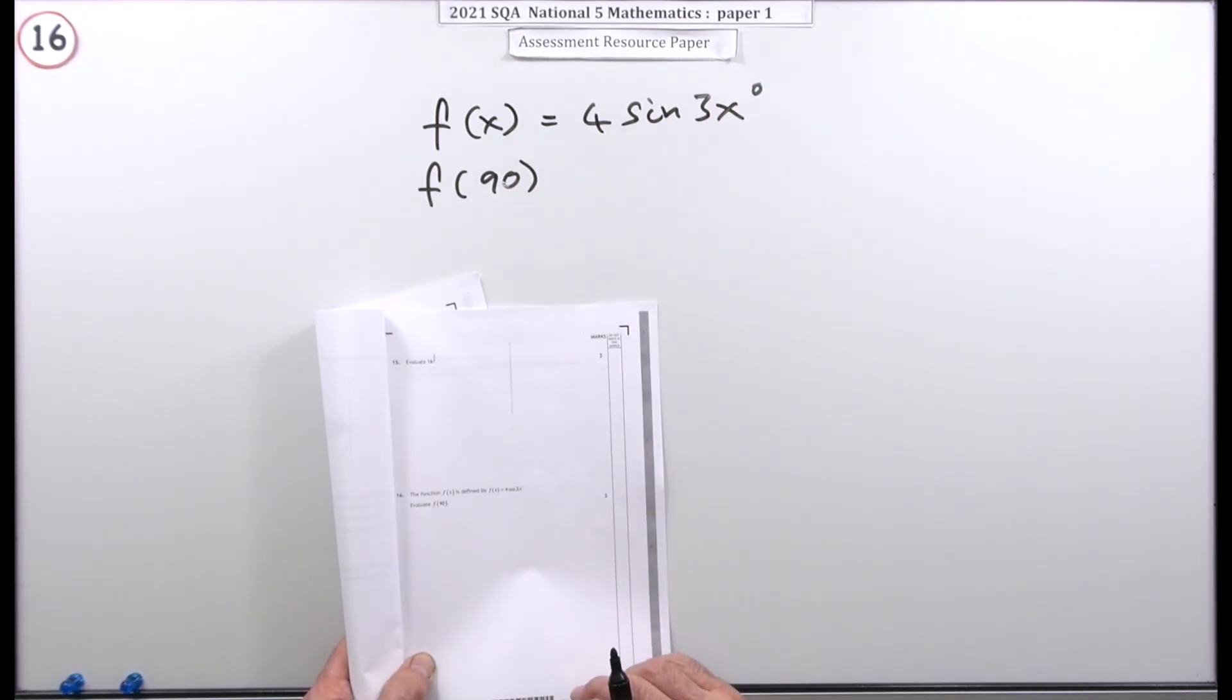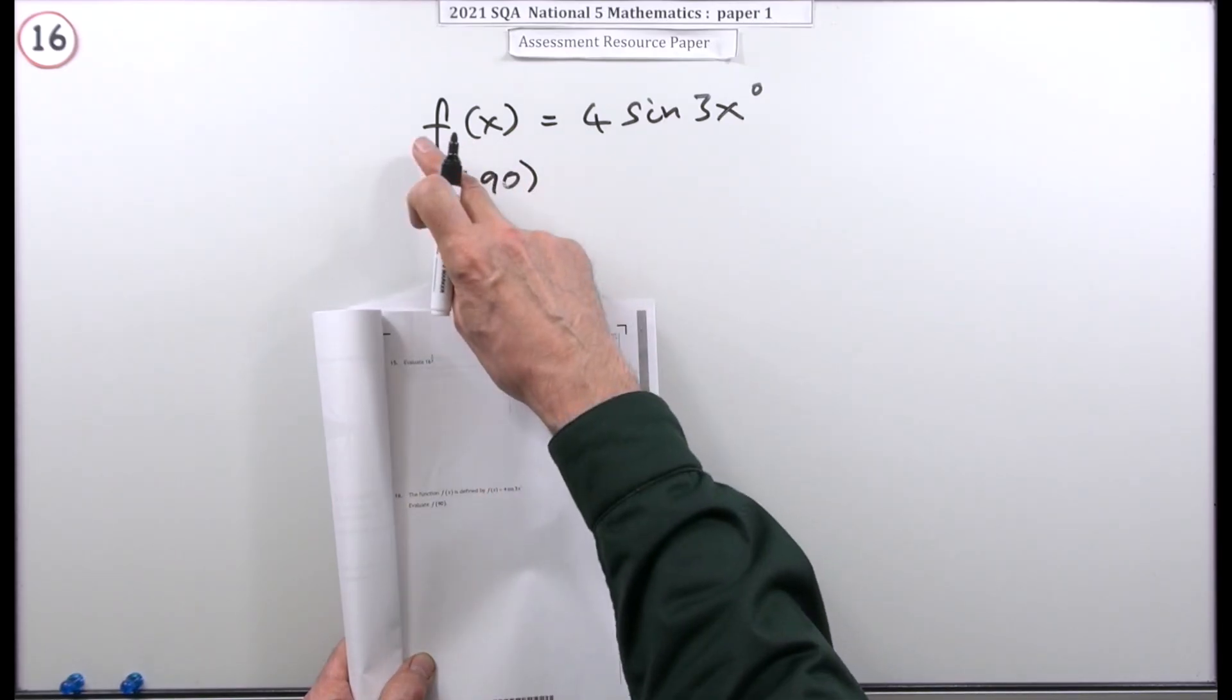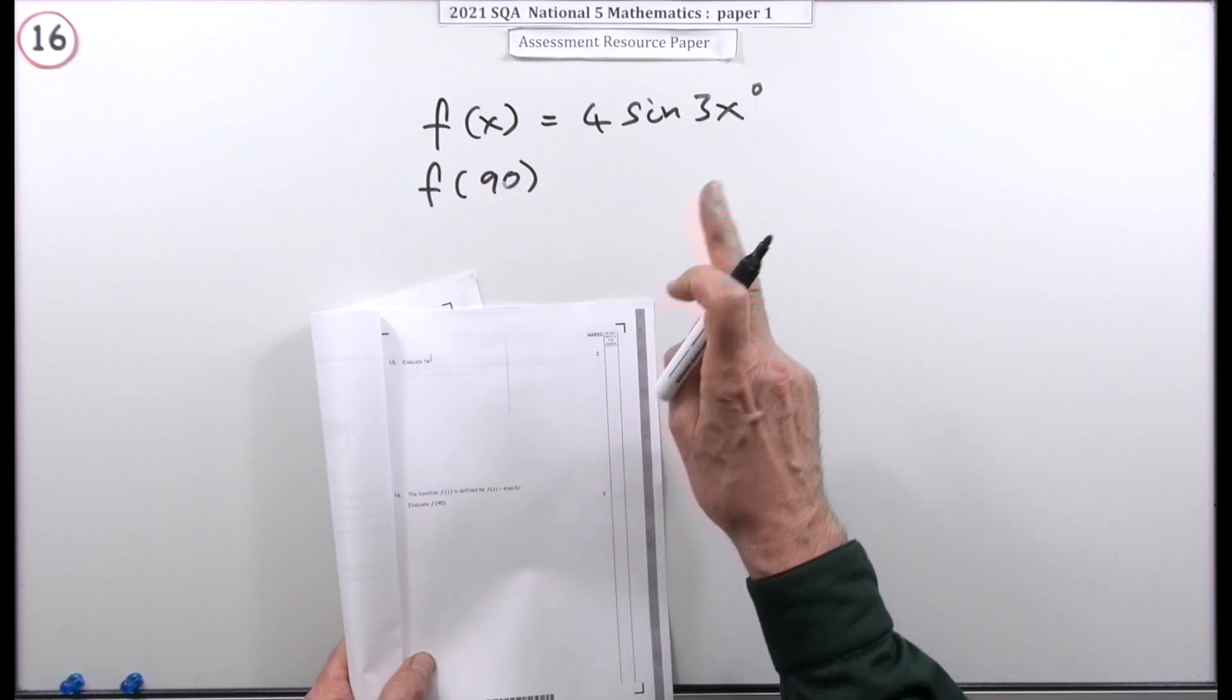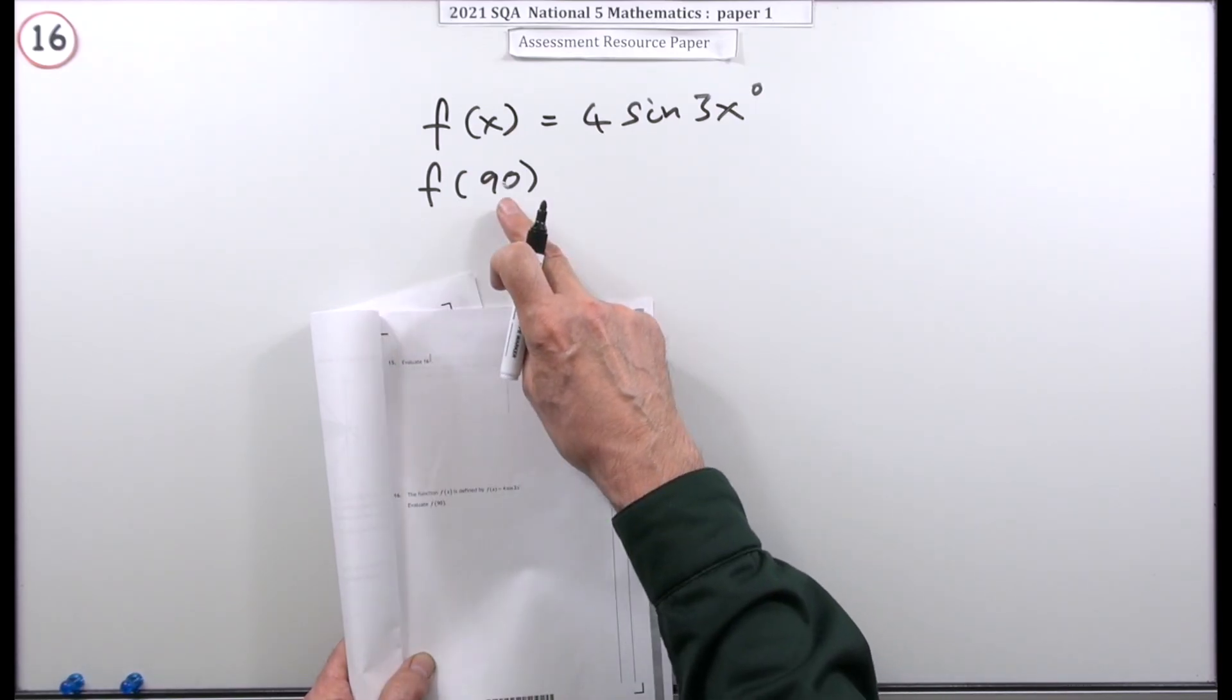Number 16 then from paper 1 of the 2021 National 5 Resource Paper. Just the two marks. A function is defined by, here's the formula for the function, f of x equals 4 sine 3x. If that's the case, evaluate f at 90.